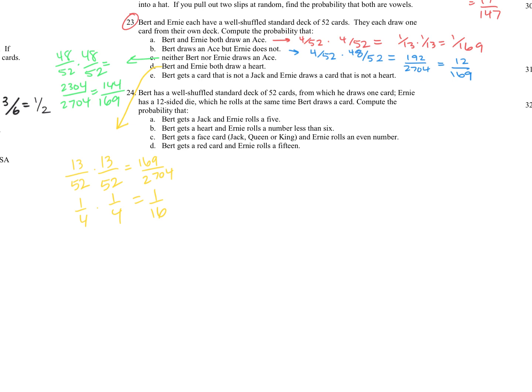All right, and then we have one more here. Bert gets a card that is not a jack, so that would be just like the not an ace, 48 out of 52. So four less cards, because there's four jacks in a deck. And Ernie draws a card that is not a heart. So not a heart would be 39 out of 52. So this becomes 1872 out of 2704, and reduces to 117 out of 169.